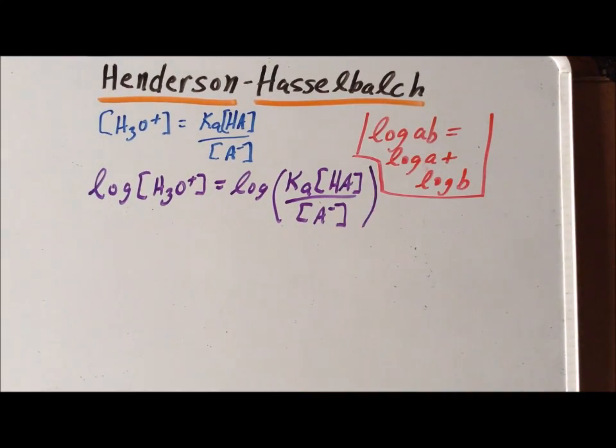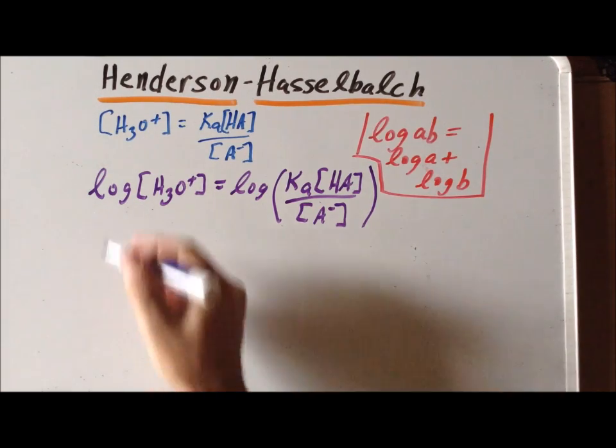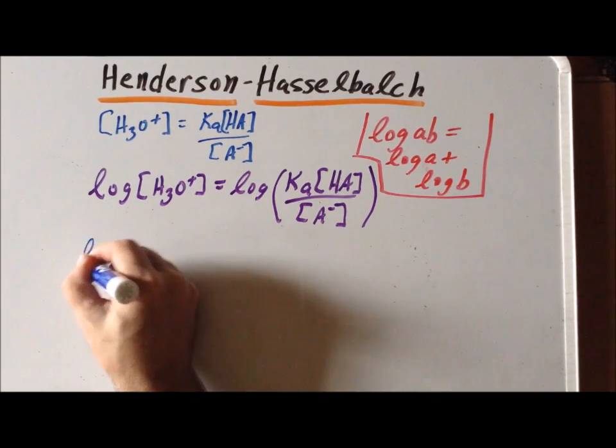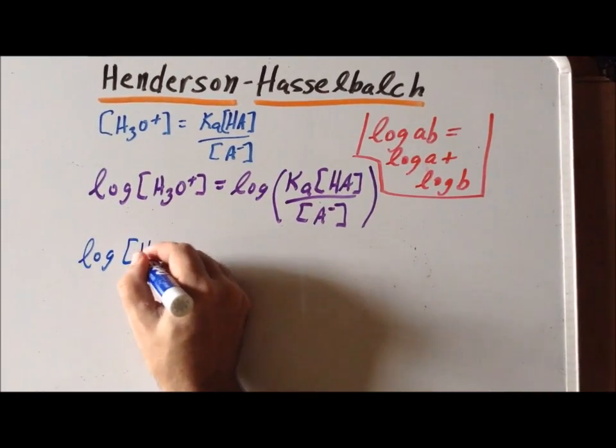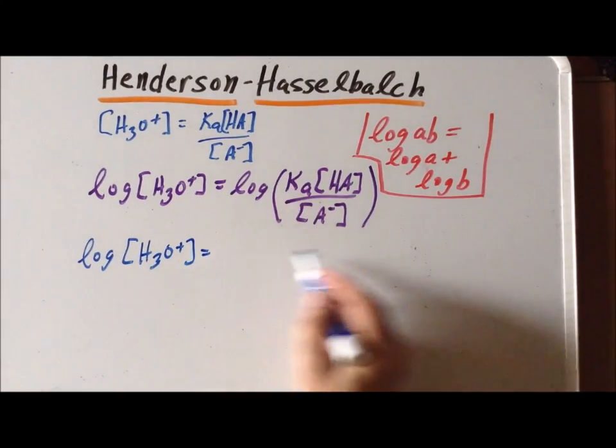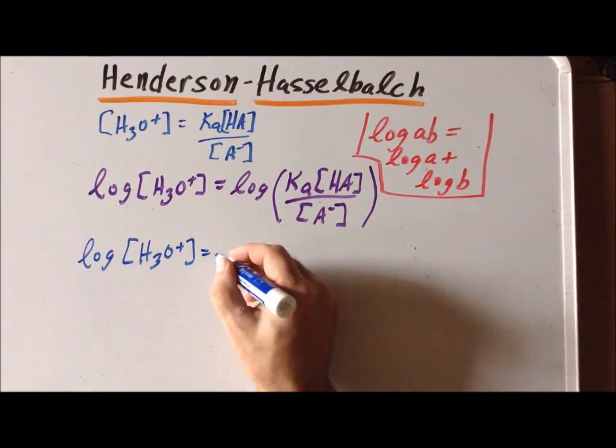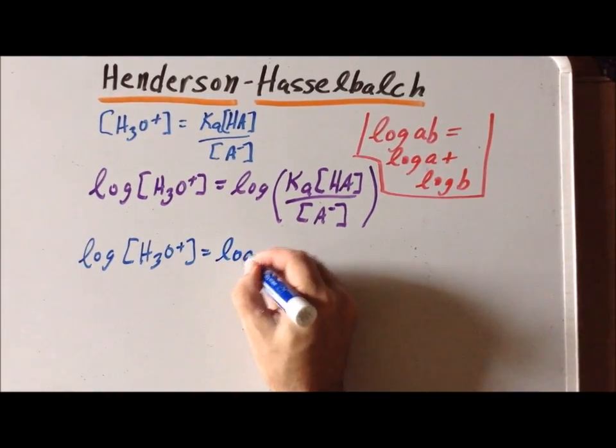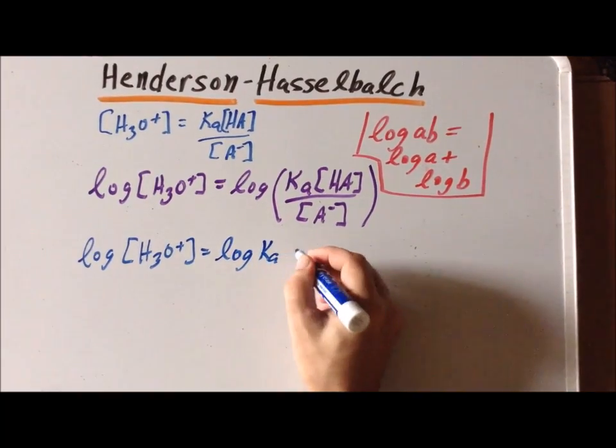And if we use that property, our left-hand side will remain exactly the same. So we have the log of H3O plus. But now we can break up the expression on the right-hand side as the log of Ka plus the log of the ratio.